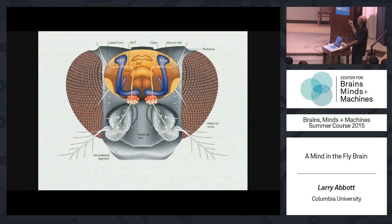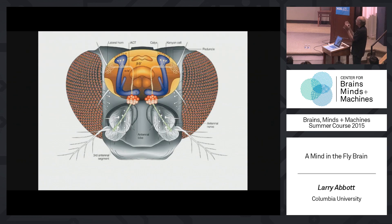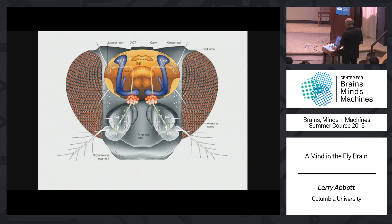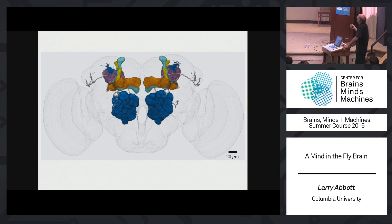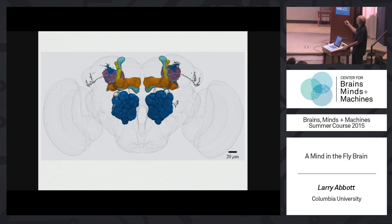The mushroom body is responsible for learned behaviors in the fly, and the lateral horn is responsible for innate behaviors. There's a division — which also occurs in your brain — of the olfactory pathway into an innate pathway and a more flexible learned pathway. Here you can see real pictures from the Janelia work overlaid on a fly brain. These are the antennal lobes, the relay station; here is a projection neuron; and this L-shaped structure is the mushroom body, with purple cell bodies visible going to the lateral horn.